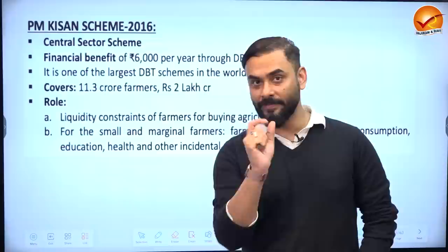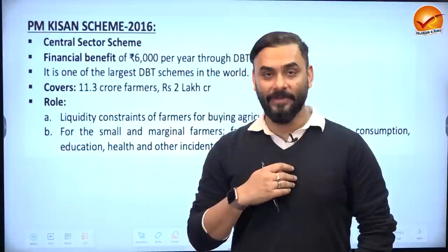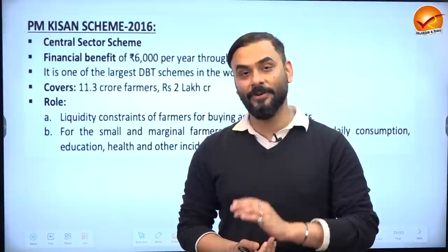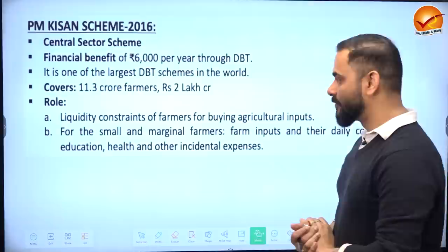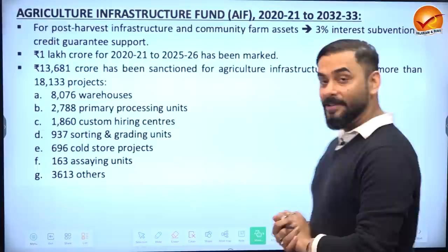PM Kisan is another income support scheme. Since 86 percent of farmers are small and marginal, they cannot immediately sell their crop for cash, yet still need to take care of their family's health, education, and daily needs. The government provides 6,000 rupees per year to farmers under PM Kisan to cover basic agricultural inputs as well as household requirements.